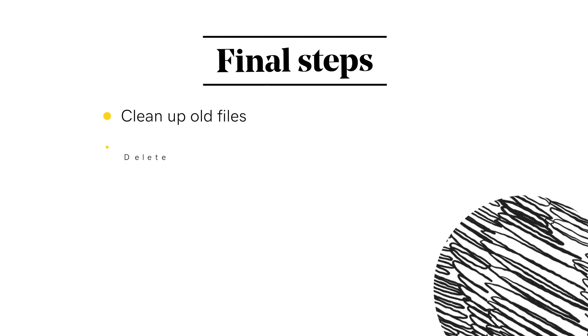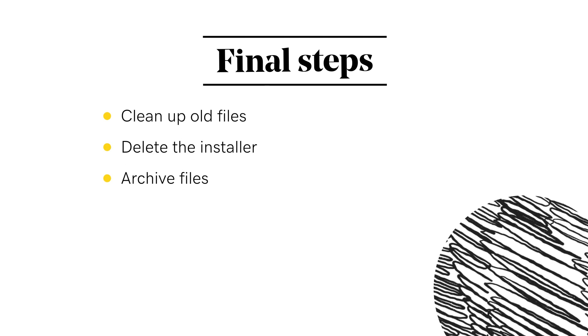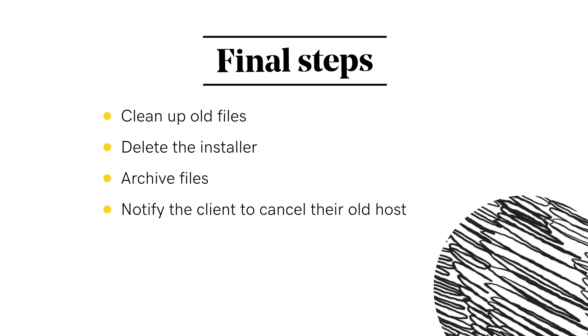Sometimes the websites you migrate will have the staging or previous domain's URLs in the database records, which can lead to issues and broken items. A quick search and replace of the database will fix this. There are a few WordPress plugins to accomplish this task, saving you from having to edit the database yourself. Lastly, clean up old files, delete the installer and archive files, then notify the client to cancel their old host. The website is now live.